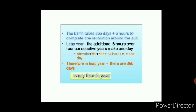But how are these additional 6 hours calculated? For that, we need to understand the concept of leap year. A leap year is a year where there are 366 days instead of 365 days. In a leap year, the additional 6 hours over 4 consecutive years make 1 day. This is the reason one extra day is added in every 4th year, and in the month of February there will be 29 days instead of 28 days.